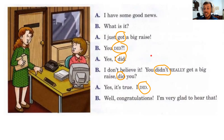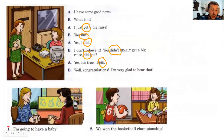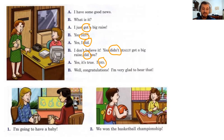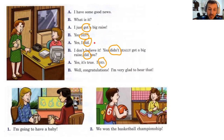We're going to practice four times. Number one: you begin — you have big news, you're going to have a baby. Go ahead. [pause] What is it? You are! I don't believe it — you aren't really going to have a baby, are you? Well, congratulations, I'm very glad to hear that. If you said 'I'm going to have a baby' — 'Yes I am, it's true, I am' — very good!